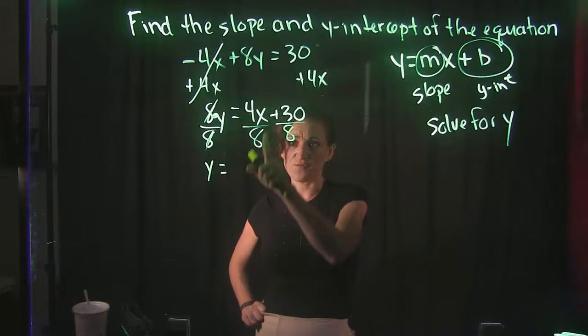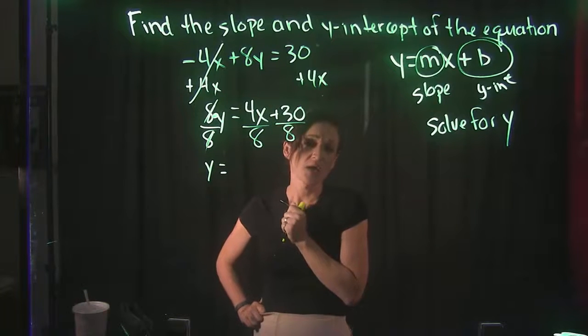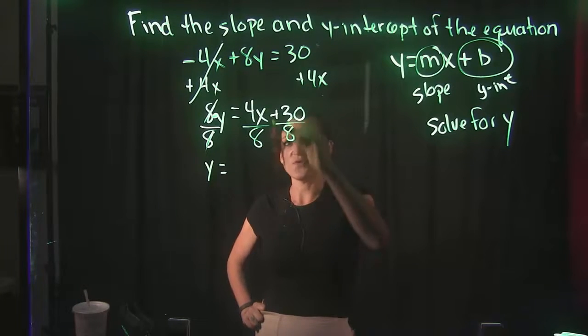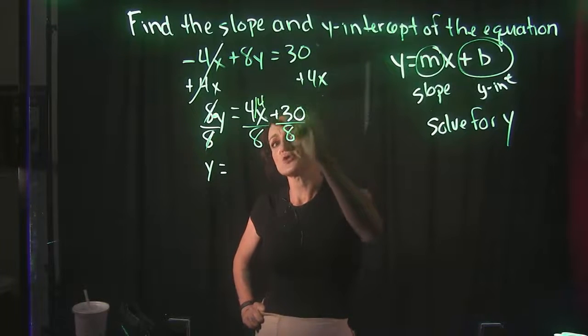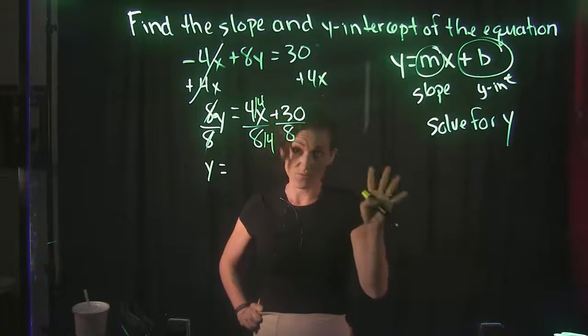And that's going to equal, let's see, we have 4 divided by 8 over here. Now 4 does not divide by 8 evenly, but it can be simplified. We can reduce this by dividing out a factor of 4.